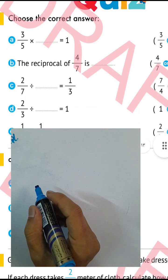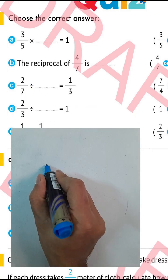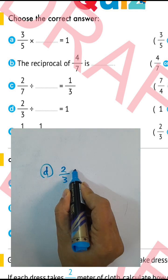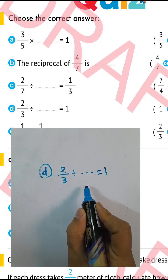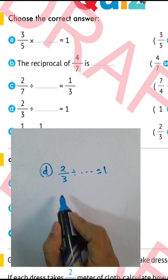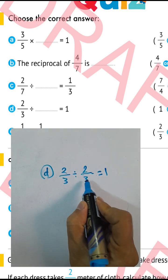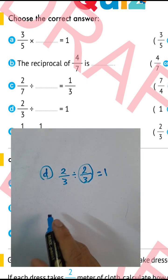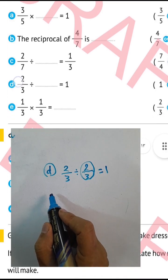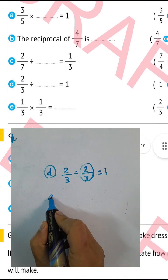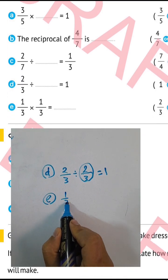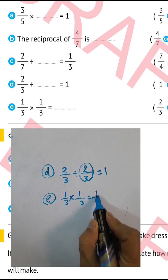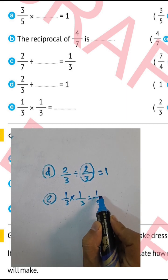Question letter D: two over three divided by what equals one? Two over three divided by itself equals one. Any number divided by itself equals one. Question letter E: one over three times one over three equals one over nine.